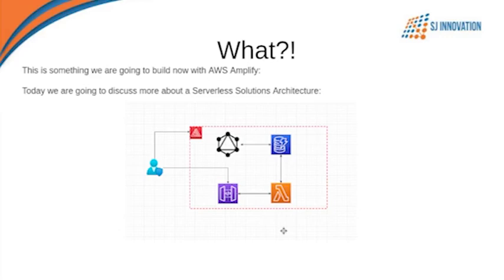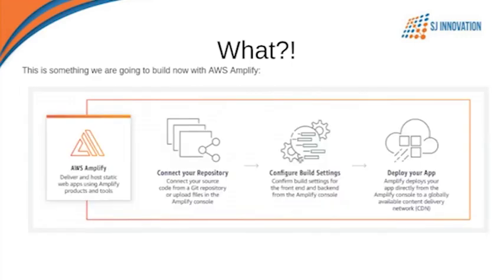On our next hands-on, I will give you an overall idea about how to create this GraphQL API and connect it with DynamoDB, and how to create a REST API communicating with Lambda and DynamoDB to develop your application backend. For front-end development, we will follow this pipeline to connect our repository, build our configuration, and deploy our front end through Amplify.